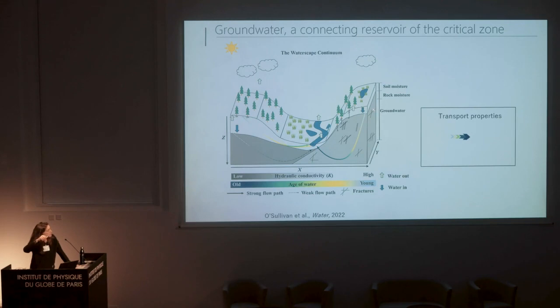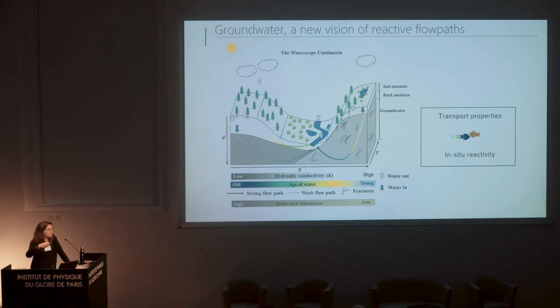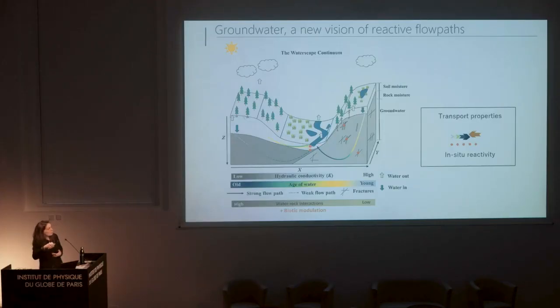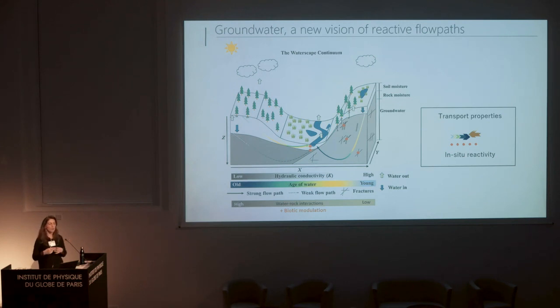One easy tracer that we often use is the age of water, because we can consider that water is aging along its flow path. This has been mainly used to better understand water-rock interactions, because the longer the water flows in the ground, the more time it has to interact with the subsurface and potentially make reactions. However, a lot of these reactions are not occurring linearly along the flow path but can be very localized or intermittent, which makes the complexity of groundwater even bigger.